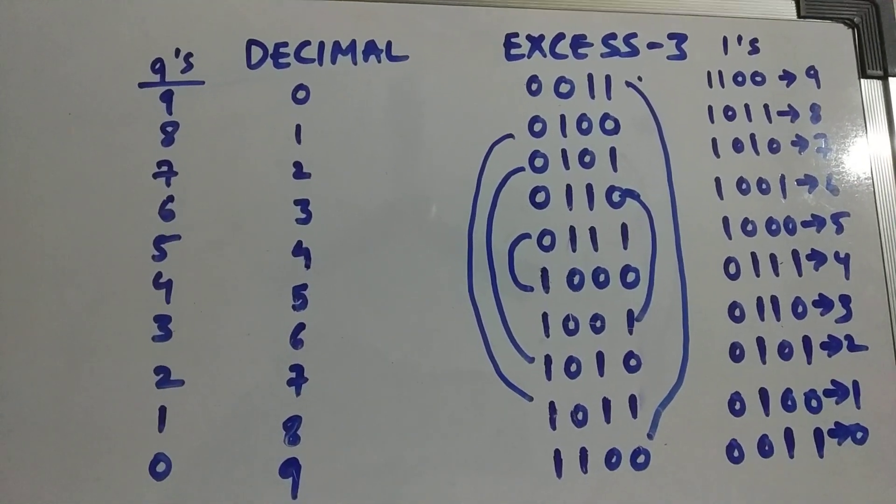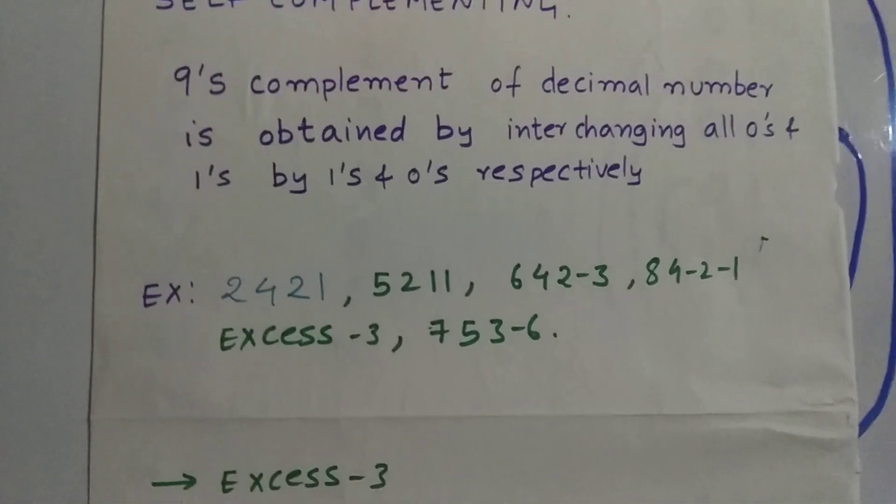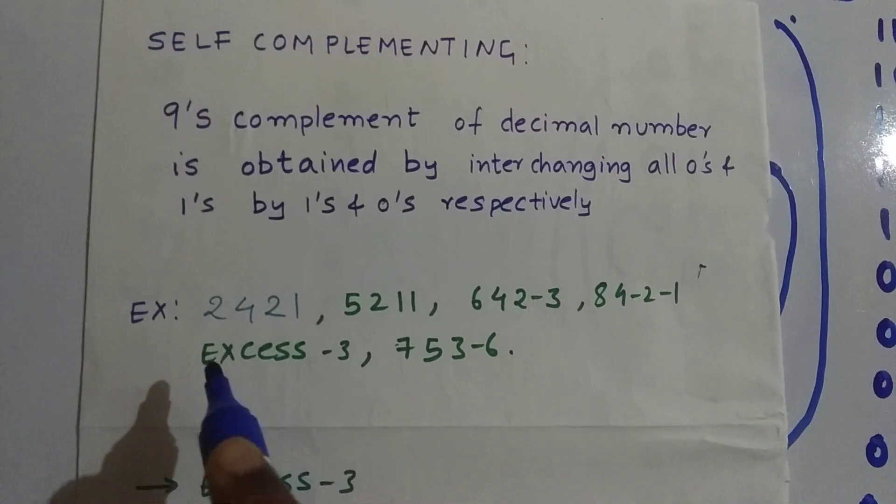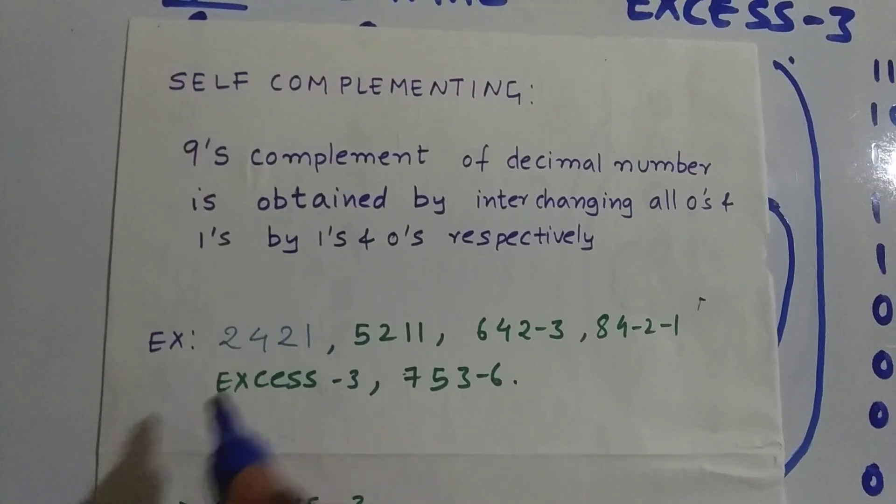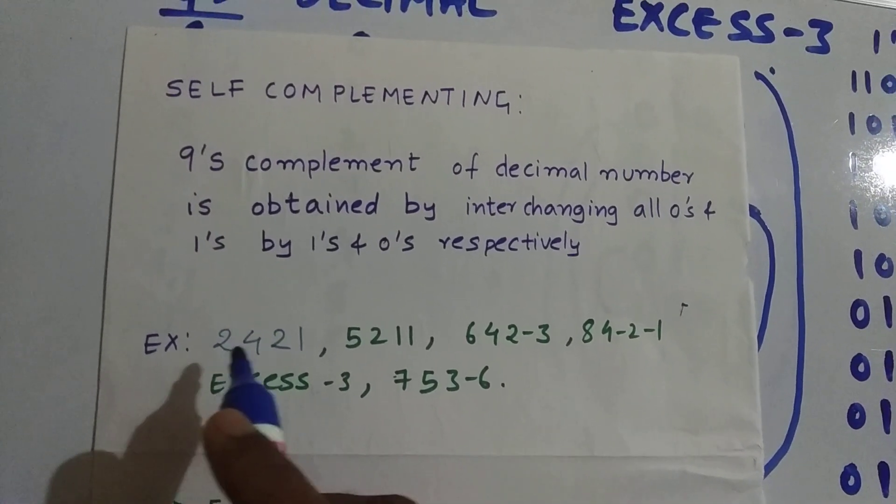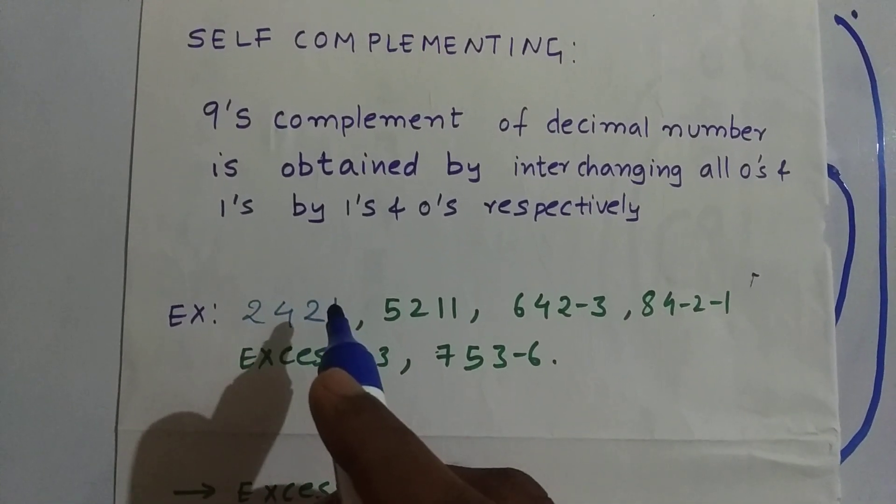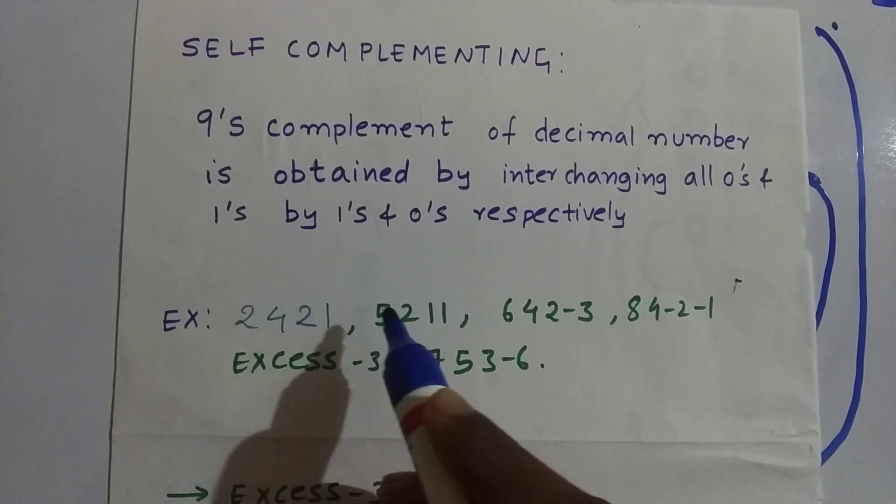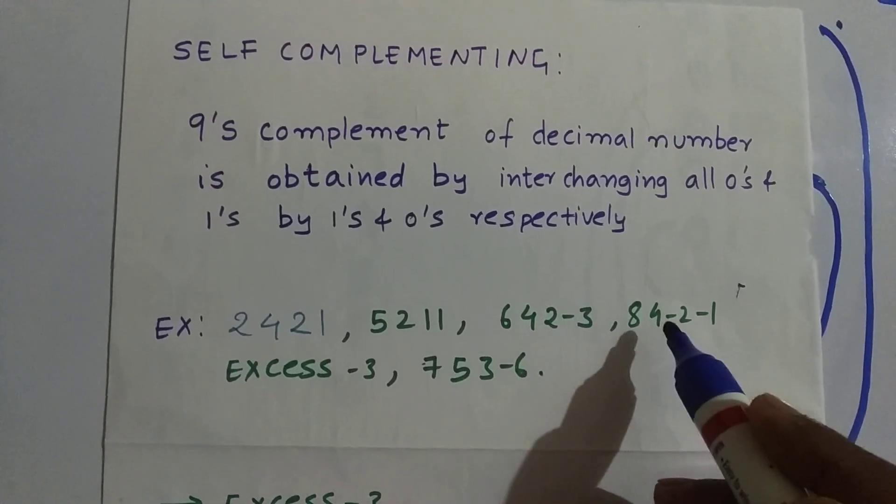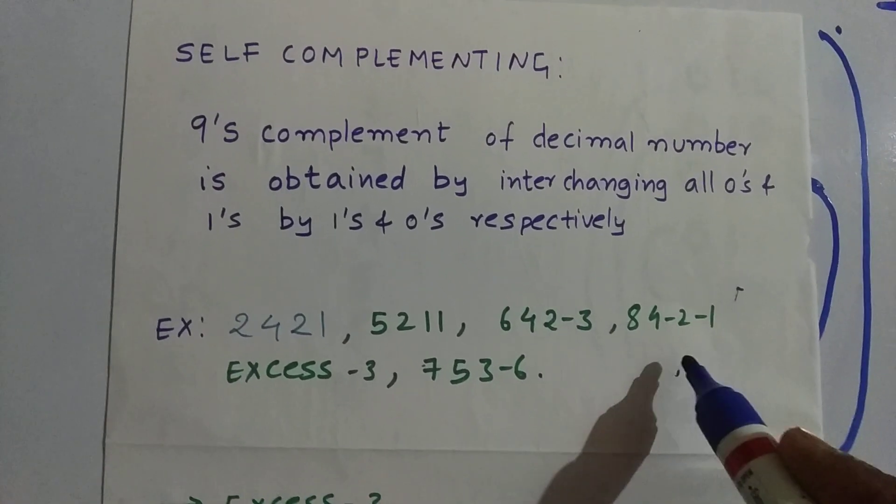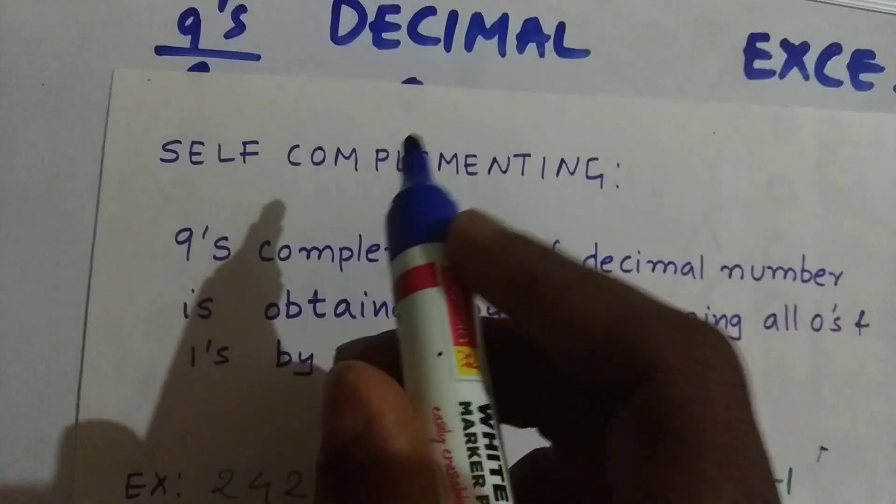I'm going to tell you a small technique to find out whether the code is self-complementing or not. As you can see, these are examples of self-complementing code. If you add these weights: 2+4+2+1 equals 9, 5+2+1+1 equals 9, 6+4+2-3 equals 9, 8+4-2-1 equals 9. If you add them all and the sum equals 9, then it's a self-complementing code.